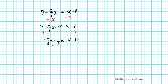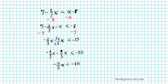Let's combine the fractions on the left side. The LCD of 3 and 1 is 3, so we multiply the second term top and bottom by 3. That gives us negative 2/3x minus 3/3x less than negative 15. Combining the numerators gives negative 5/3x less than negative 15. We're done when x is isolated, so multiply both sides by the reciprocal of negative 5/3, which is negative 3/5.